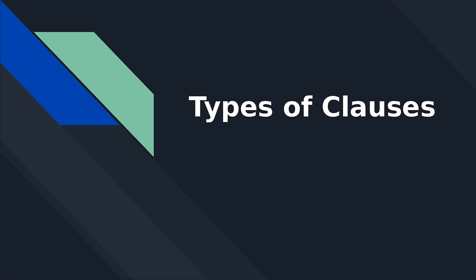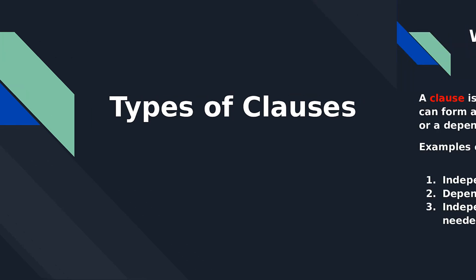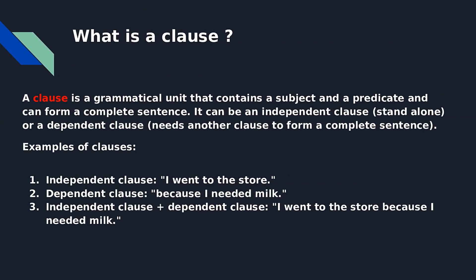What are the types of clauses? What is a clause? A clause is a grammatical unit that contains a subject and a predicate, and can form a complete sentence.